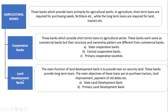The next type is Land Development Bank. Its main function is to provide loans on the security of land. The main objectives of these loans are to purchase tractors, land improvement, and payment of old debts. Banks in this category include State Land Development Bank and Primary Land Development Bank.